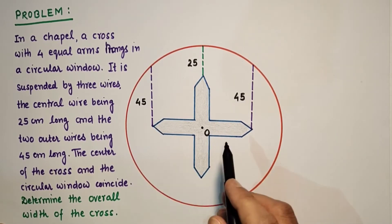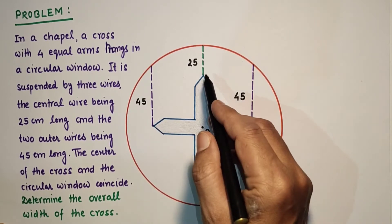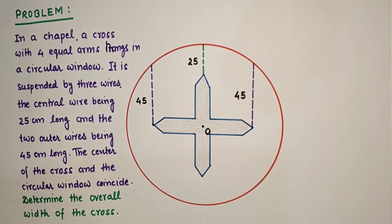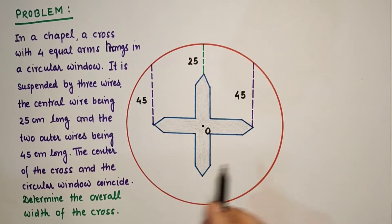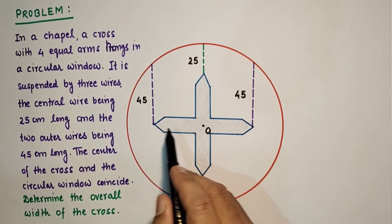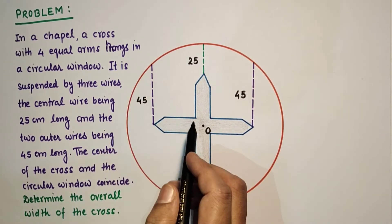Determine the overall width of the cross. From here to here, this length we have to find. So to determine the width of the cross, we have to do some constructions. So from here to here we have to join, we have to join from here to here also, and from here to here.